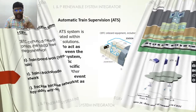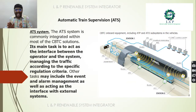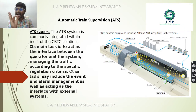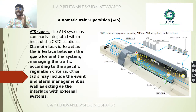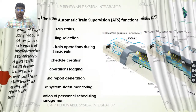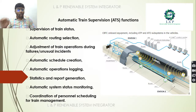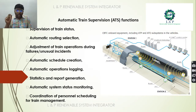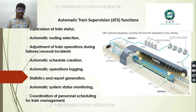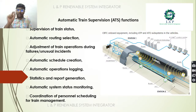ATS (automatic train supervision) acts as an interface between the operator and the system, managing traffic according to specific regulation criteria. It plays an important role in event and alarm management with external systems. Its major functions include: supervision of train status, automatic route selection, adjustment of train operation during unusual incidents, automatic schedule creation, automatic operation logging, statistics and report generation, automatic system status monitoring, and coordination of personal scheduling for train management.